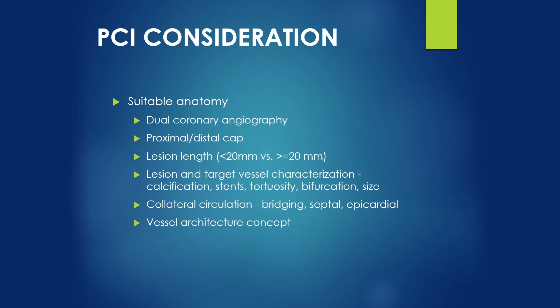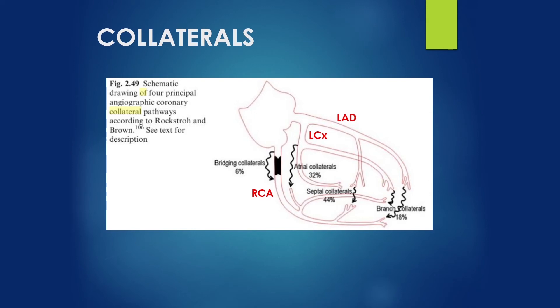To define suitable anatomy, we need dual coronary angiography, need to define the proximal and distal cap, and nail the lesion length. Lesion and target vessel characterization — such as calcification, stents, tortuosity, bifurcation, and size — are important. Collateral circulation needs to be determined, whether they are bridging, septal, or epicardial. This image of collaterals shows various types: bridging collaterals, epicardial collaterals, and septal collaterals that often bridge the LAD to a distal part of the RCA.